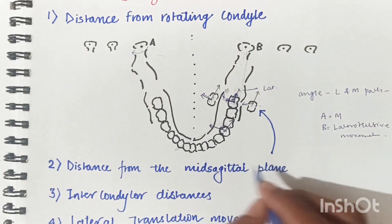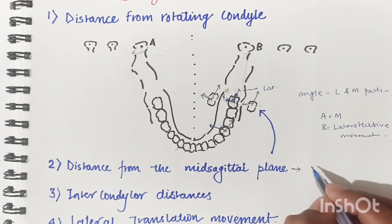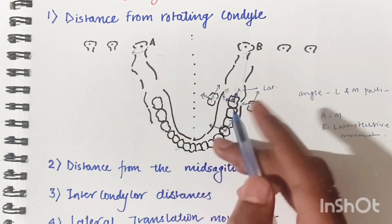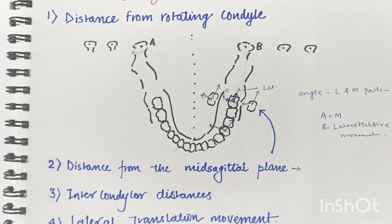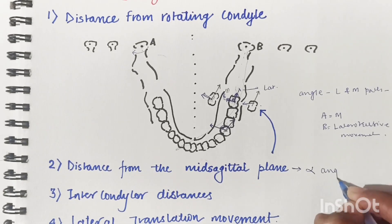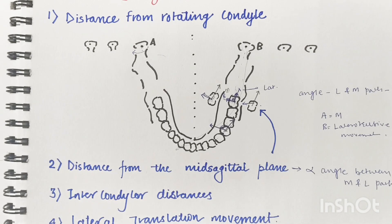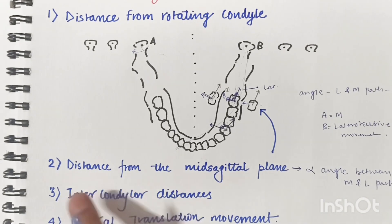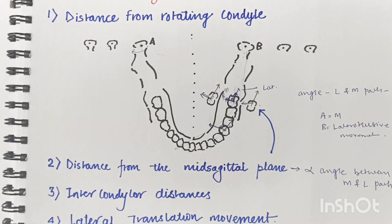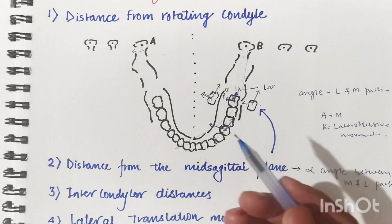As we move away from the mid-sagittal plane, the angle between mediotrusive and lateral trusive paths increases — it is directly proportional. The third horizontal determinant is intercondylar distance, and we need to understand how it affects the angle between mediotrusive and lateral trusive paths.